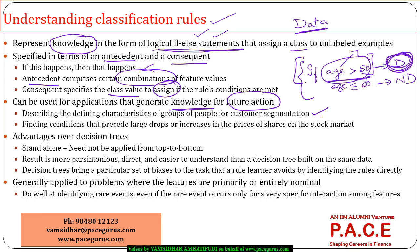Applications include customer segmentation — looking at characteristics of groups of people to predict which product will be purchased by which group. Similarly, for stock prices, we can identify conditions that precede large drops or large increases. All these things can be targeted effectively using classification rules.